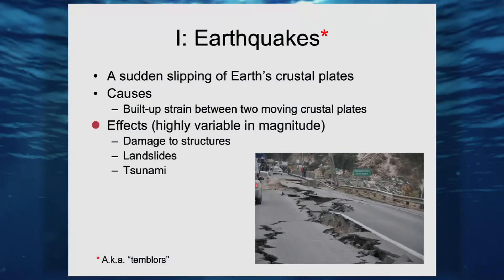Earthquakes are highly variable in magnitude. They're going on in many, many locations regularly. Depending on how big they are, effects will include damage to structures — some will just rattle the plates in the kitchen cupboard, others will bring down buildings. If the soil is saturated and there's a shaking of the Earth's crust, that can produce a landslide. And then finally, in some cases, in coastal areas or in the open ocean, there can be, as a result of an earthquake, a tsunami.